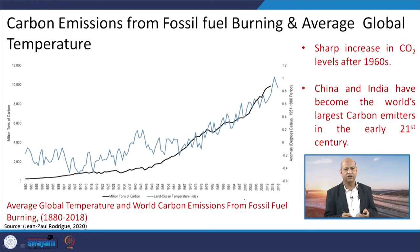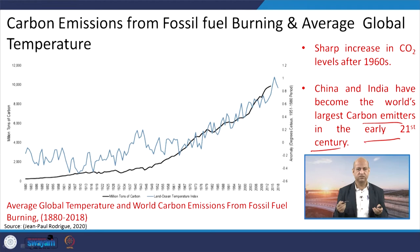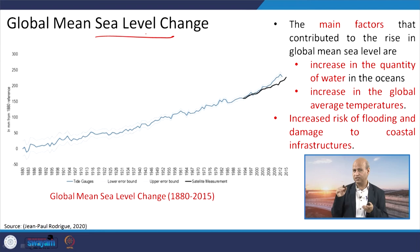Carbon emissions from fossil fuel burning and average global temperature have shown a good positive relationship — both increasing significantly over the last two centuries. China and India are estimated to be among the world's largest carbon emitters, while the US tops in terms of air pollution and greenhouse gases. Global sea temperature is also increasing and sea levels are changing, putting coastal cities under threat — issues that must also be addressed.